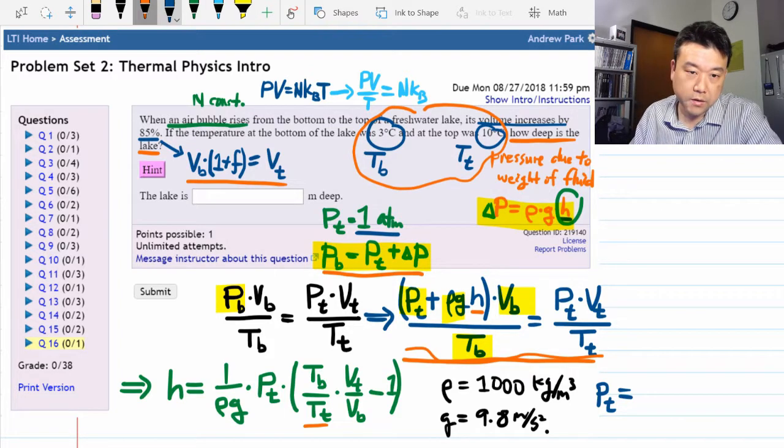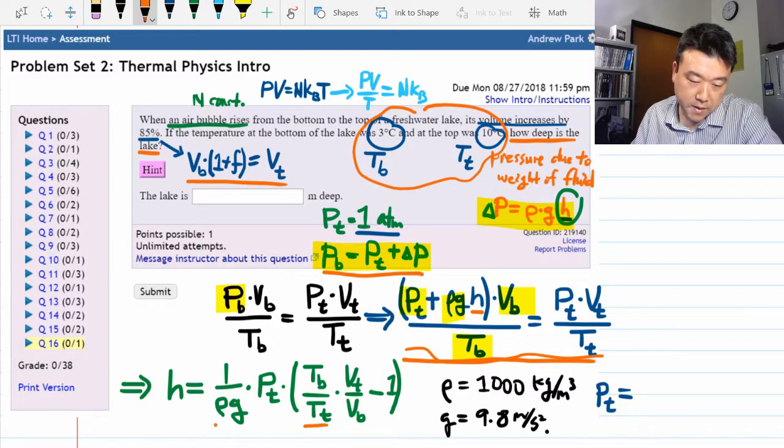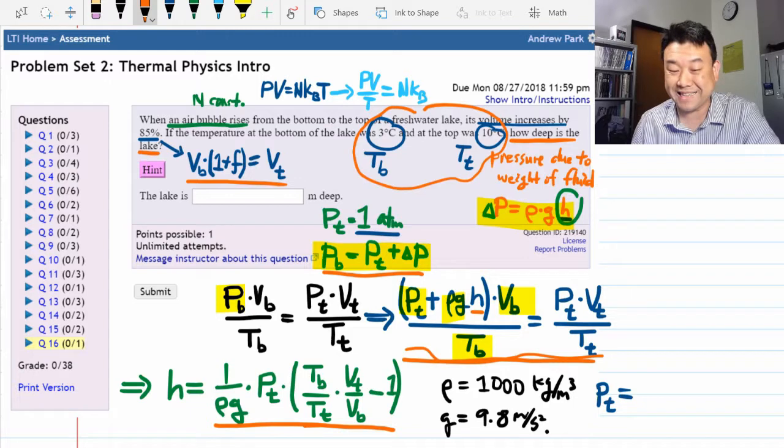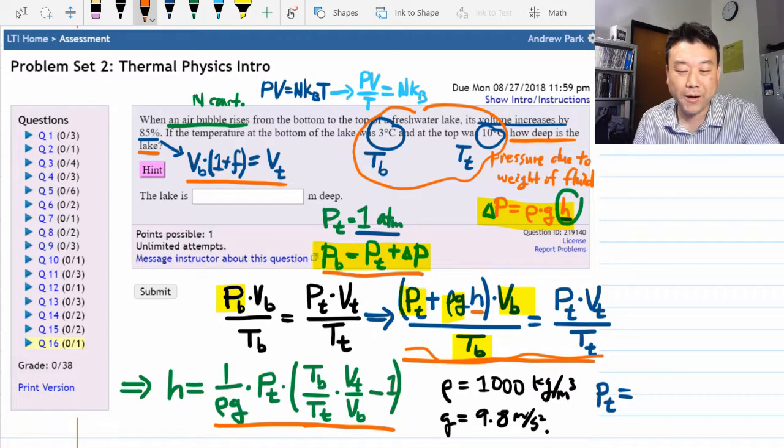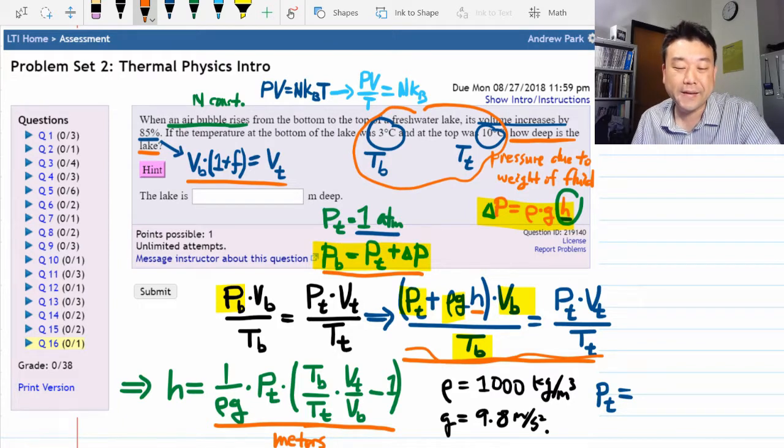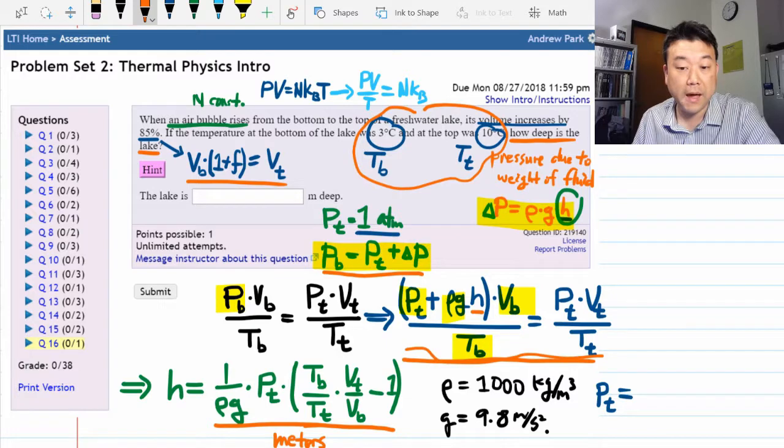That's because when you look at this combination of quantities here, you're kind of hoping that automatically this will all work out to be units of meters. When you are relying on something like that happening, simply automatically, then you need to use basic SI units because 1 atmosphere won't cancel out with anything.